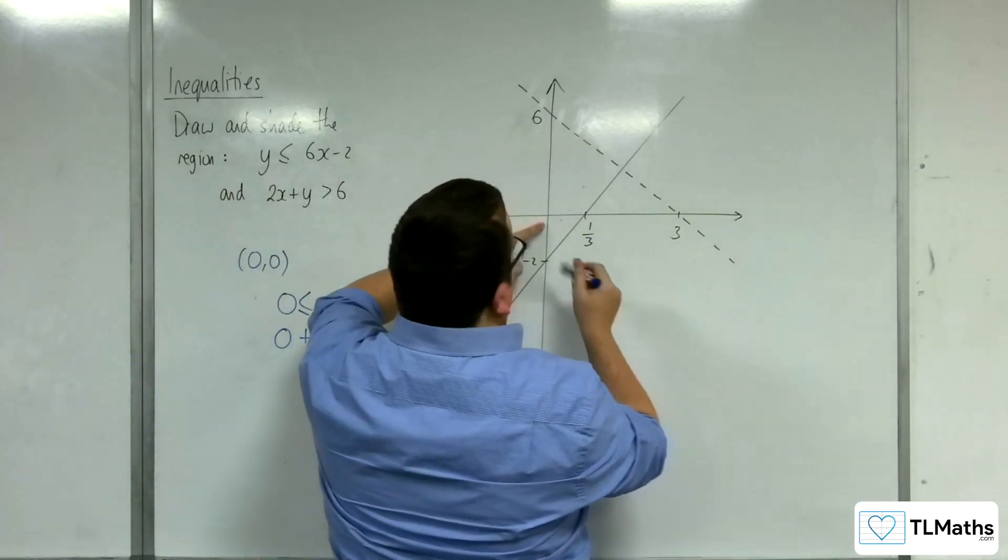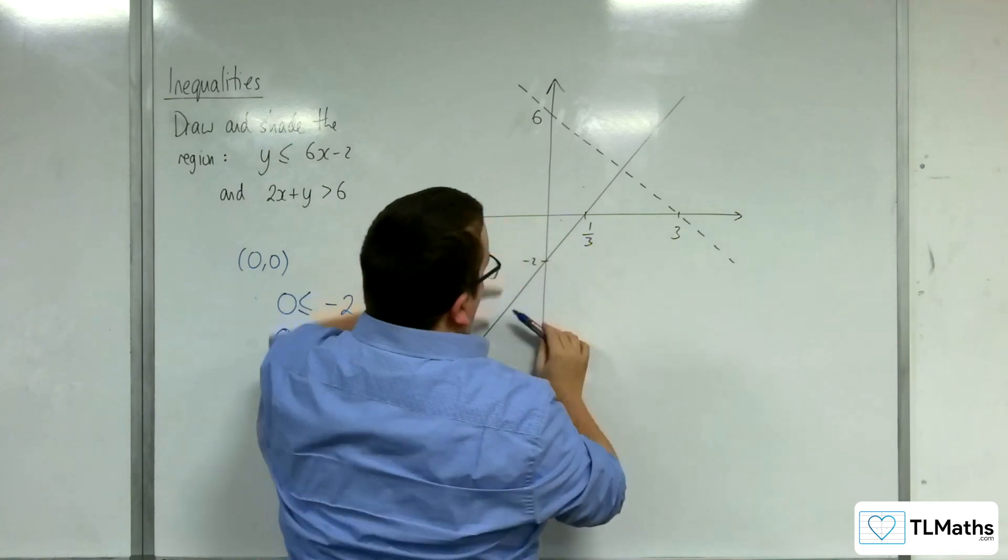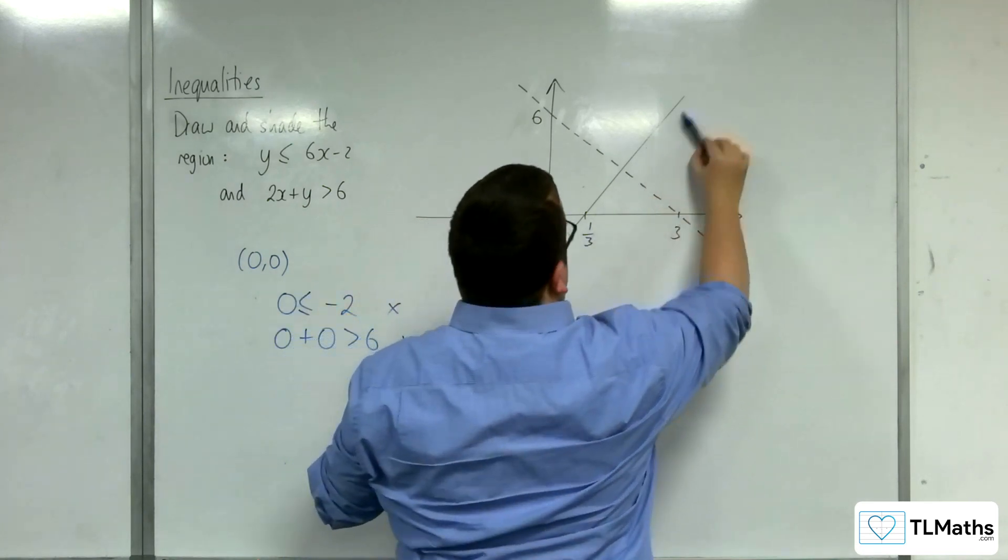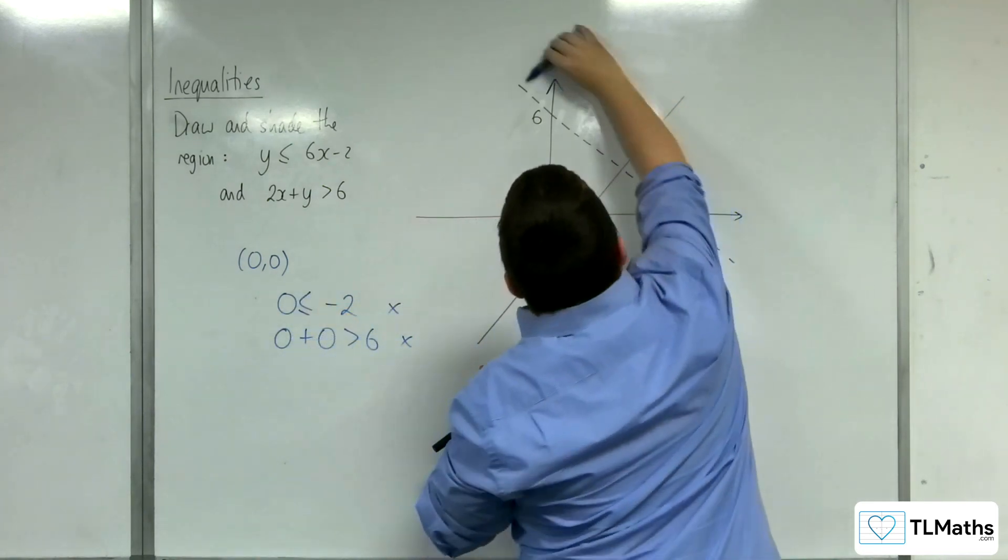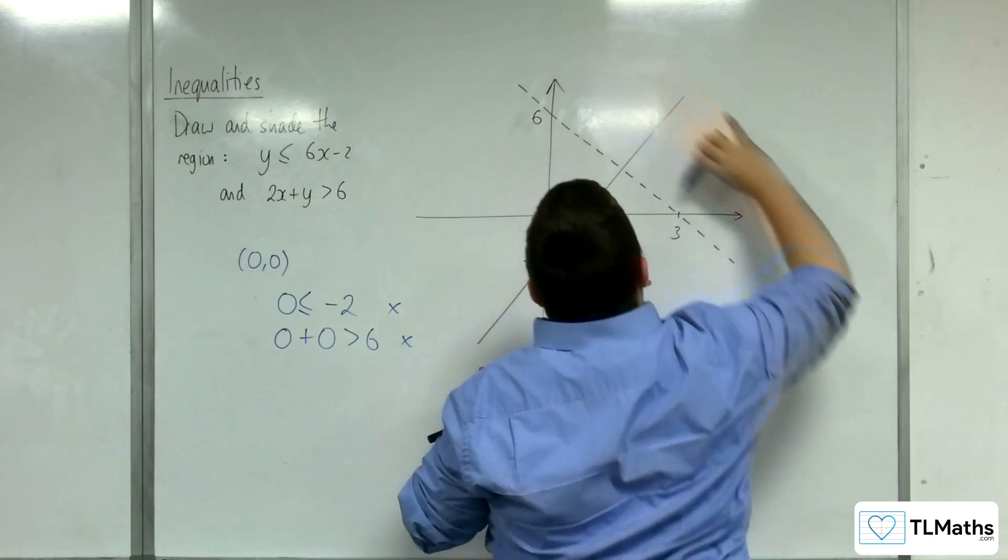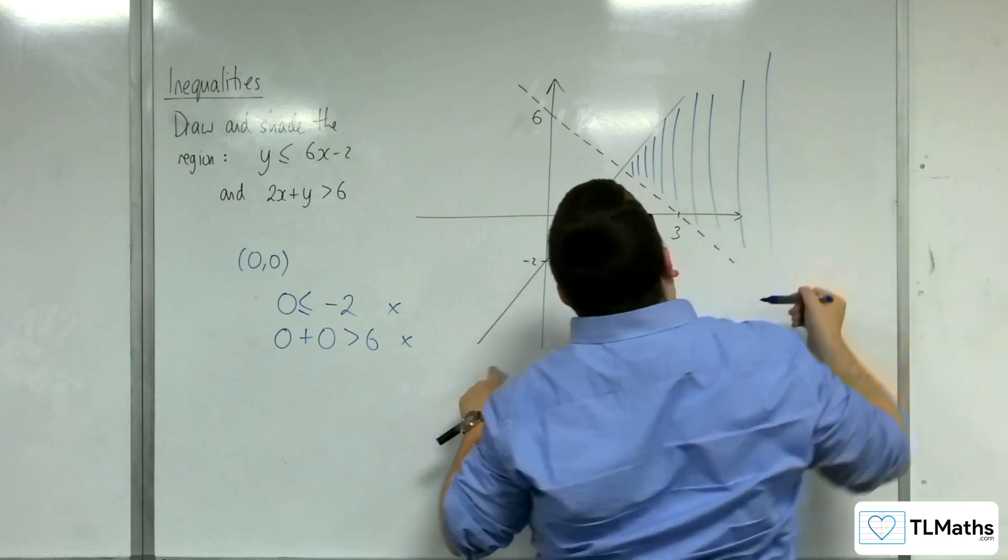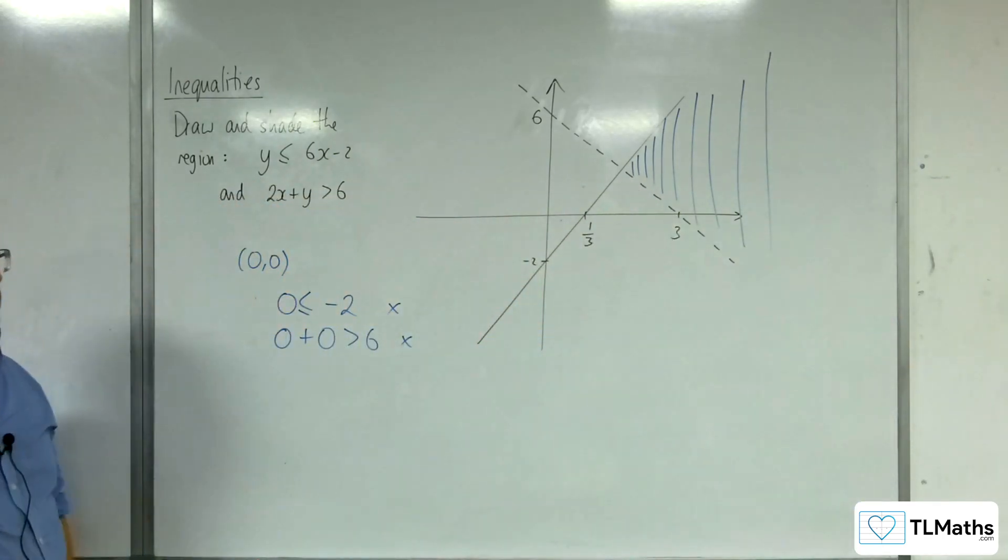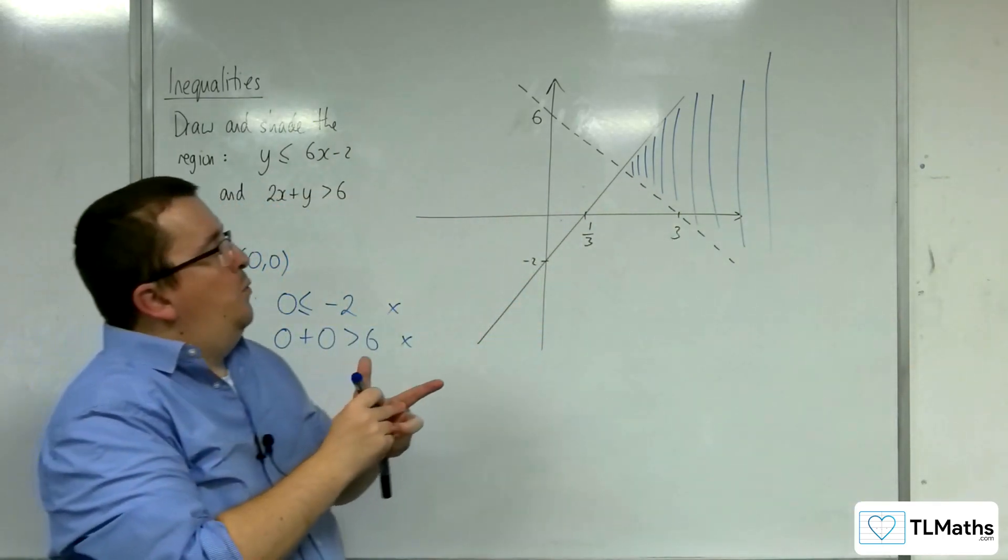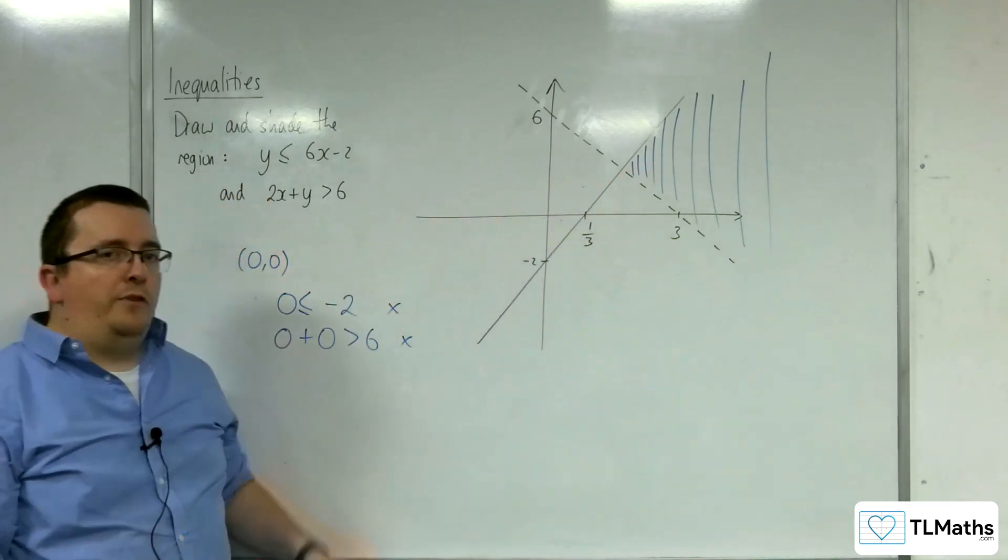Okay, so it must be, the region I want is to the right of this line and above that line. And so the only region that must be is this region here. Okay, and so that's the region I want that is satisfied by both of those inequalities.